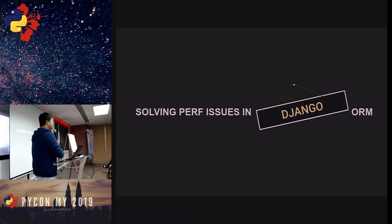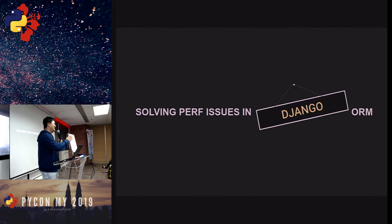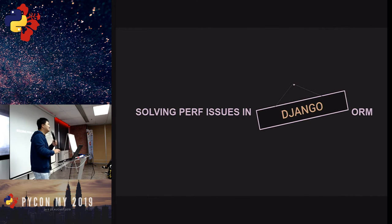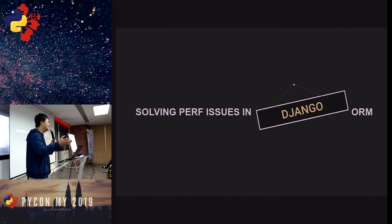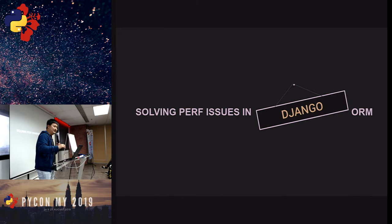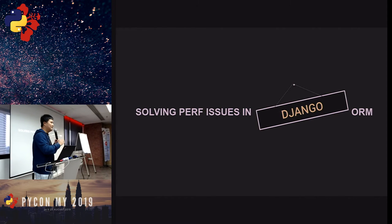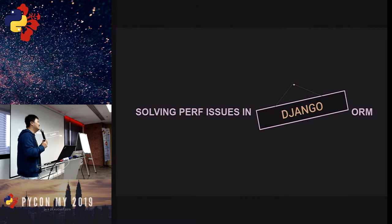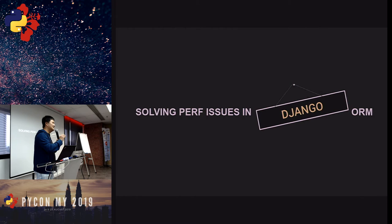In Django you just create a model, define the fields, run a command and everything is set up. After that, another command deploys it straight into the database — it performs the migration. At my company, Jewel Payment Tech, we have different clients with different requirements, which means different databases. So Django is perfect because it's agnostic to a certain level.